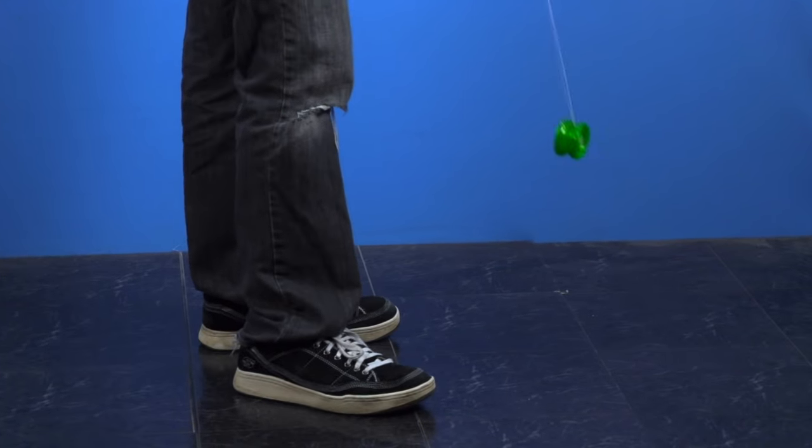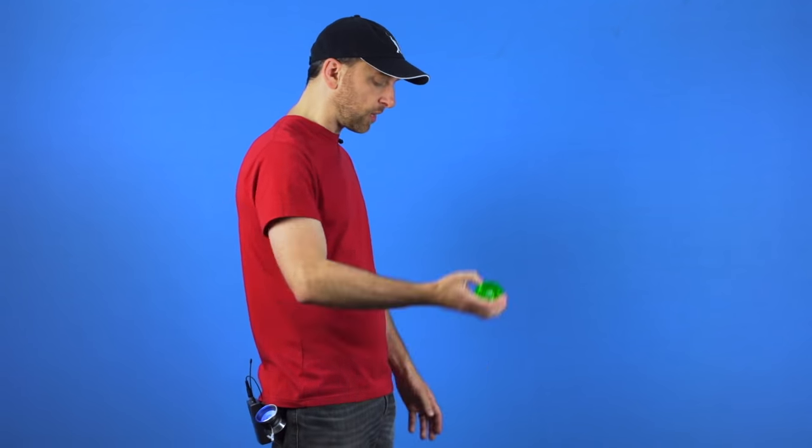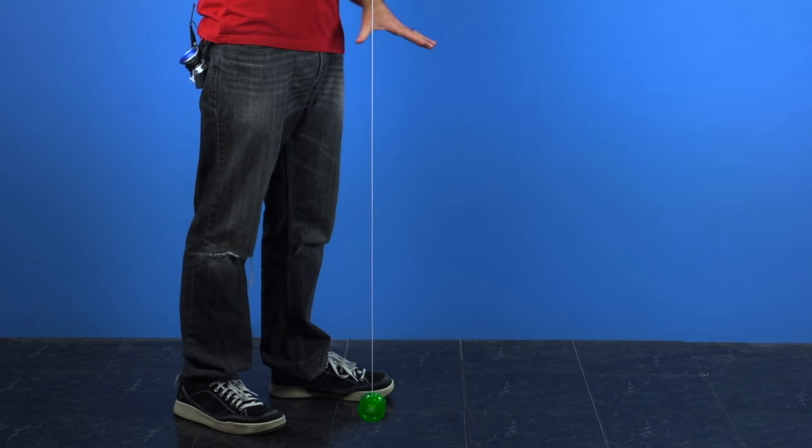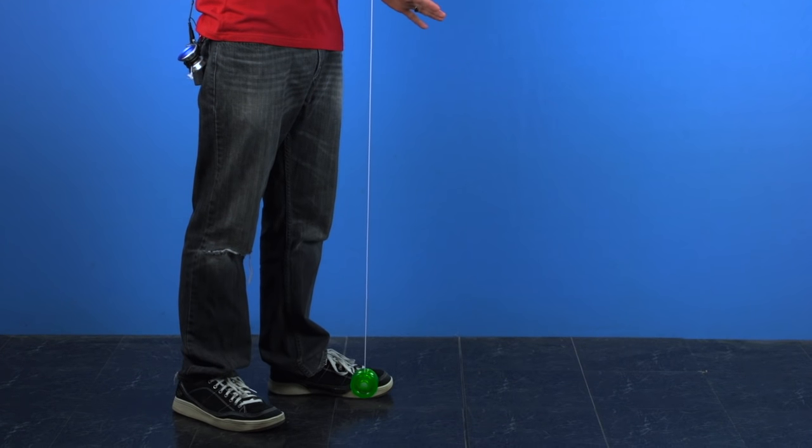Now when you start to work on this trick, it might not work as well as you'd like, so I'm going to give you a couple of tips to help make the trick work even better. Now the first thing is, when you start doing Walk the Dog, the first time that you do it, if you just set the yoyo right down onto the ground, it's not going to move forward very much.